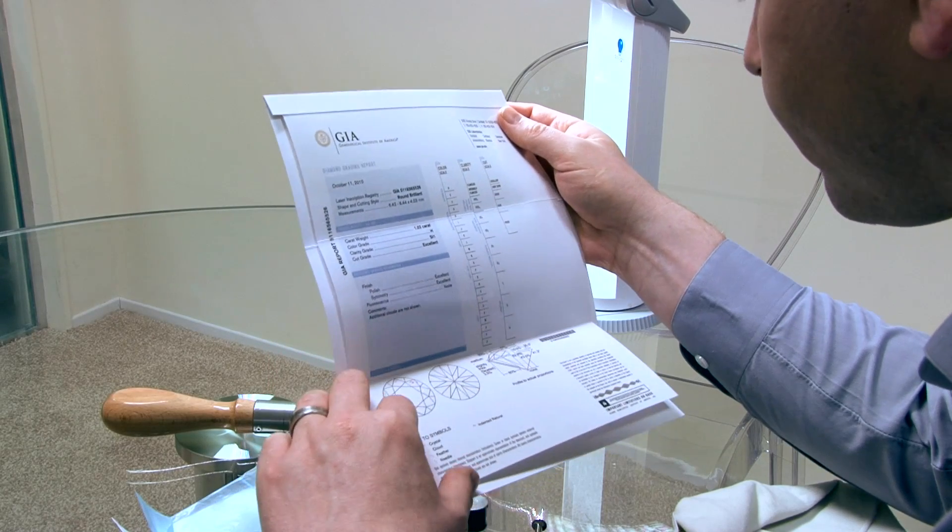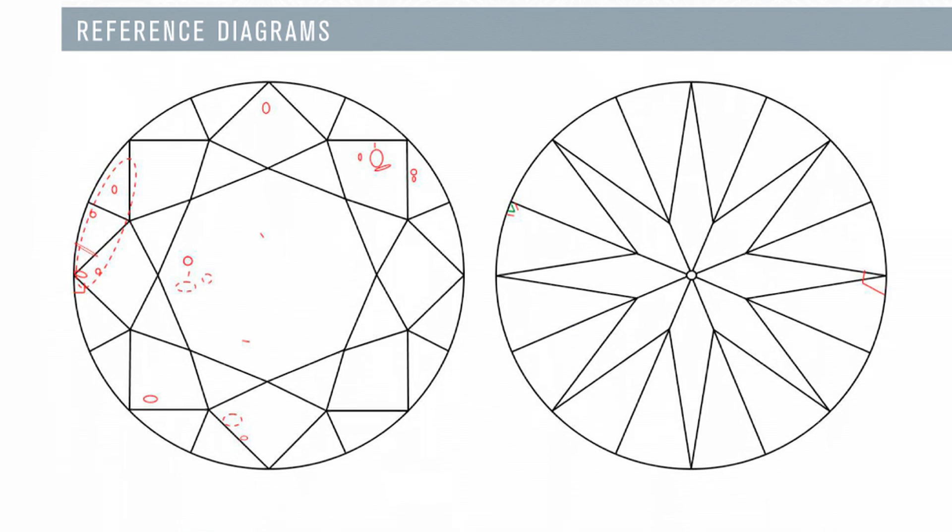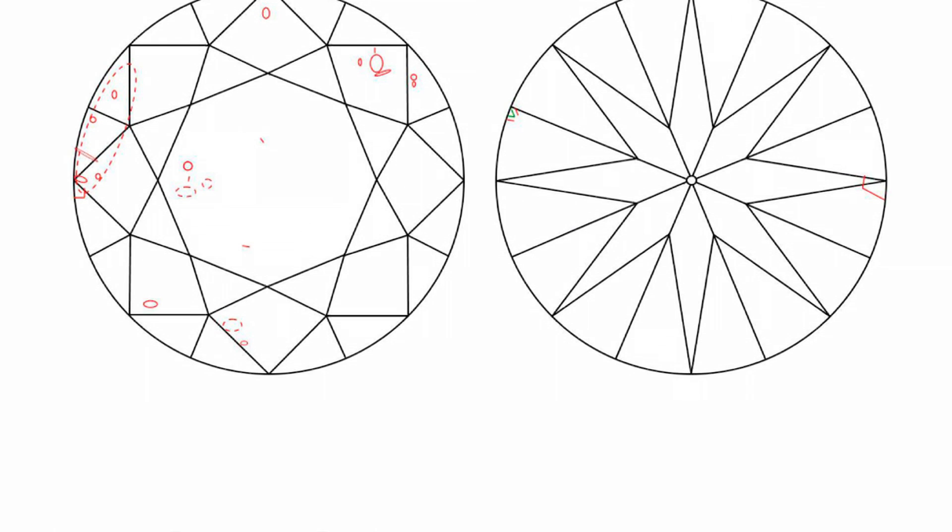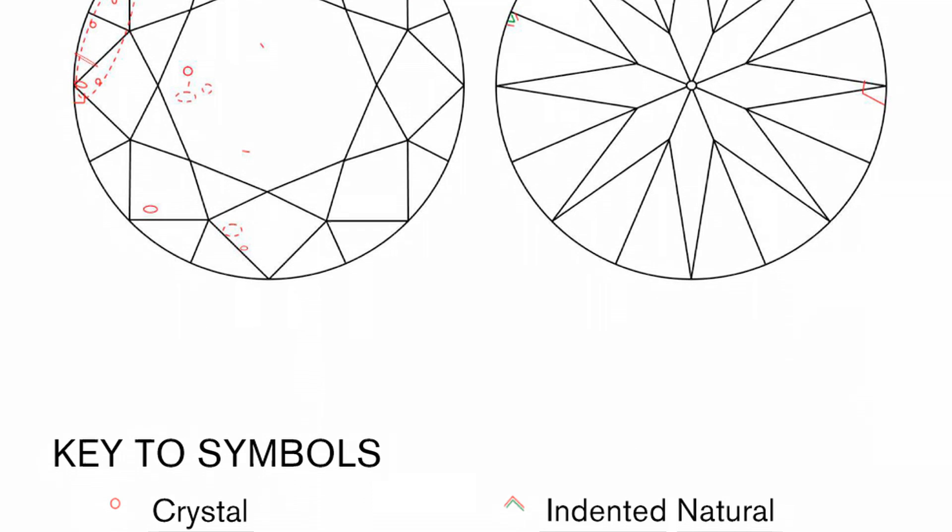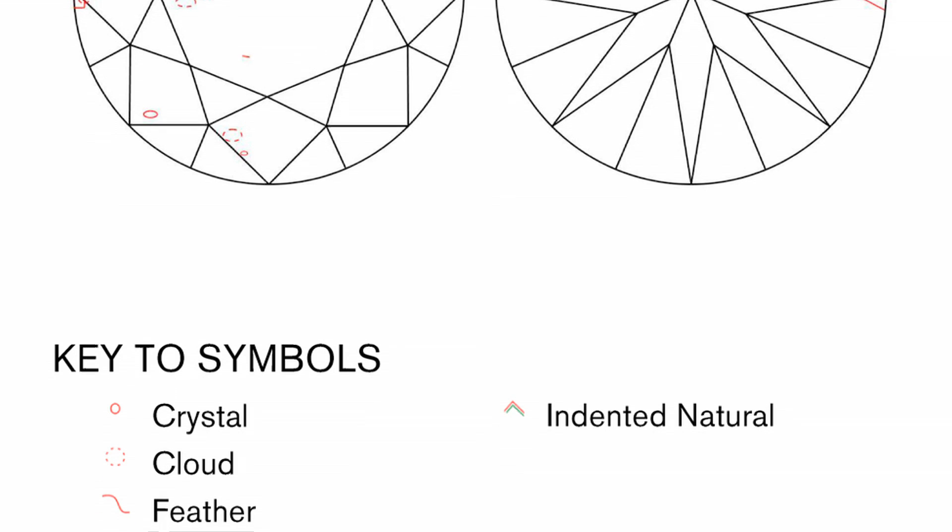When you look at a diamond certificate, you'll often have a clarity characteristics line or an inclusion map with a key. This is telling you what the inclusions look like in your diamond, and in the case of the inclusions map, where they are positioned within the stone. So this diamond has a few different types of inclusions.